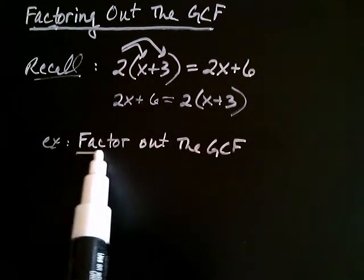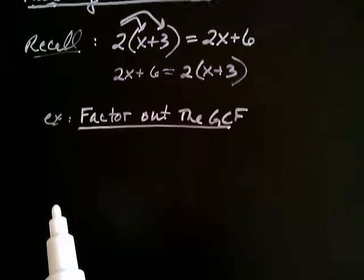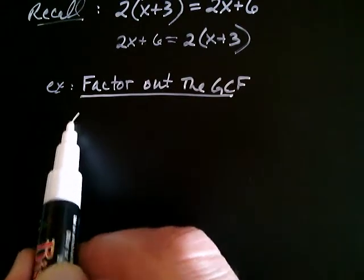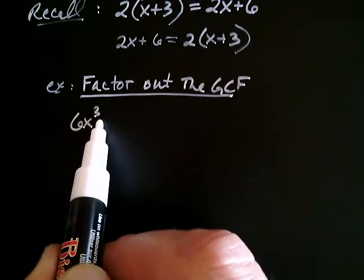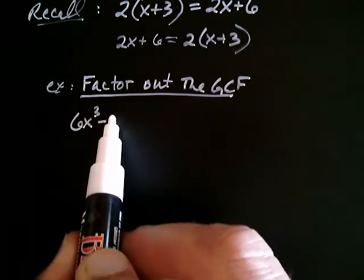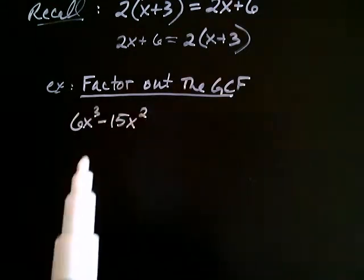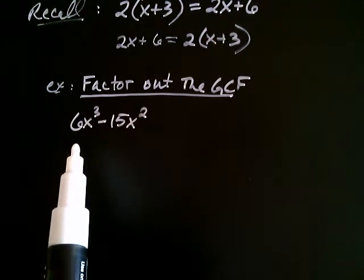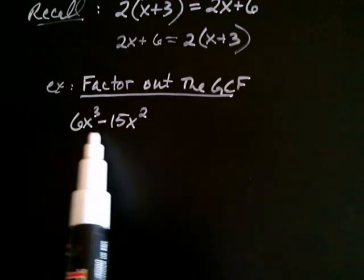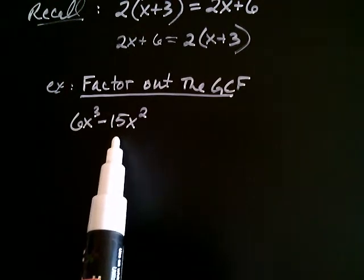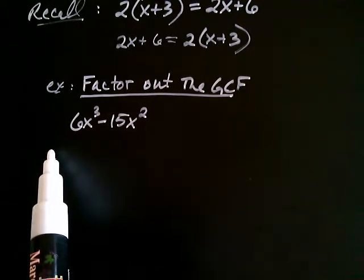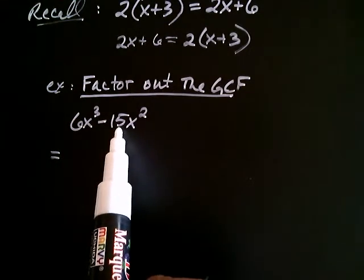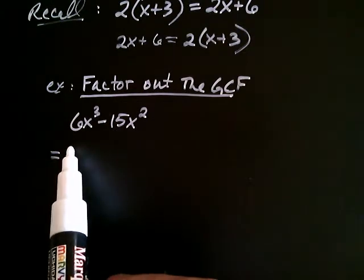So we're going to factor out the GCF. Let's say that we had the following sum: 6x cubed minus 15x squared. What we do is we begin by finding the GCF of these two terms. Like we did in the previous video, we ask ourselves, well, let's start with the 6 and the 15. What's the GCF of 6 and 15? That would be 3.